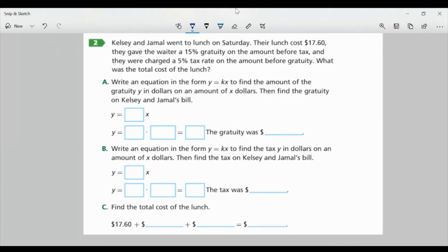Kelsey and Jamal went to lunch on Saturday. Their lunch cost $17.60. They gave the waiter a 15% gratuity on the amount before tax, and they were charged a 5% tax rate on the amount before gratuity. What was the total cost of the lunch? So essentially, we're going to have to find 15% of $17.60 and 5% of $17.60. Part A: Write an equation in the form Y equals KX to find the amount of the gratuity Y in dollars on an amount of X dollars. Then find the gratuity on Kelsey and Jamal's bill.